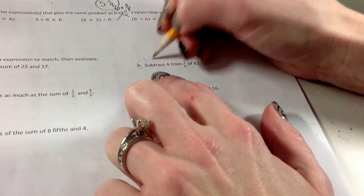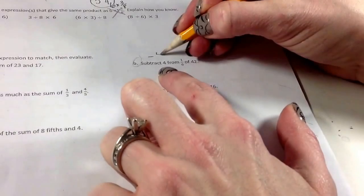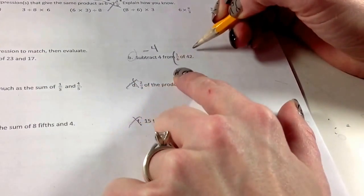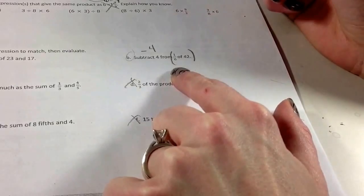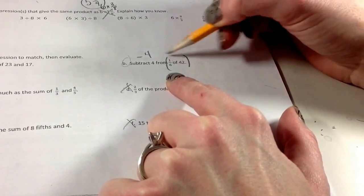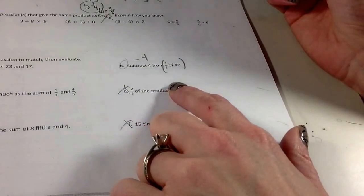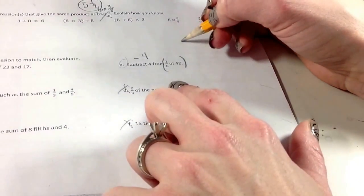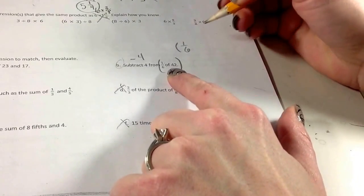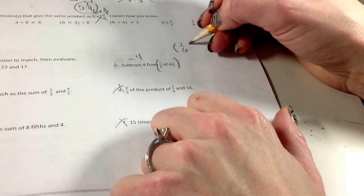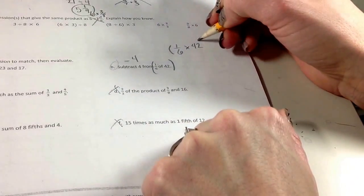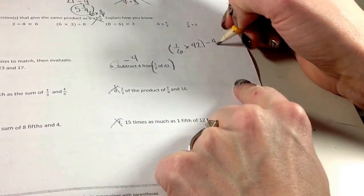It says subtract 4, so I know I'm going to subtract. I know I'm going to be subtracting 4 from 1 sixth of 42. So it's talking about subtracting 4 from actually both of these, because it's talking about these as a unit. So I want to put those, I want to put parentheses around those. So 1 sixth of 42. When I talk about a fraction of a number, I'm actually multiplying. So that would look like 1 sixth times 42, and I'm subtracting 4 from that.